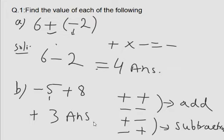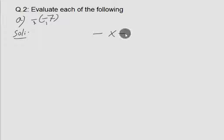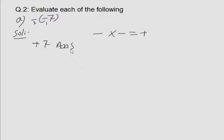Now look at question number 2: evaluate each of the following. In question 2, you simply add or subtract negative and positive numbers using the same method. Look at option A: minus into minus 7. Simply multiply this minus sign with the other minus sign — minus times minus gives a plus sign. So your answer is plus 7.